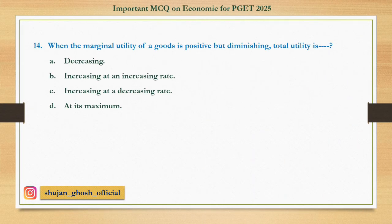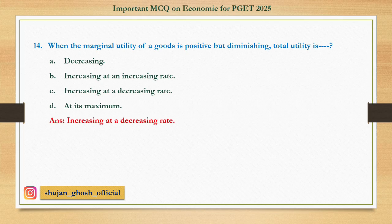Question number fourteen: When the marginal utility of a good is positive but diminishing, total utility is — option A: decreasing; B: increasing at an increasing rate; C: increasing at a decreasing rate; D: at its maximum. Answer: increasing at a decreasing rate.